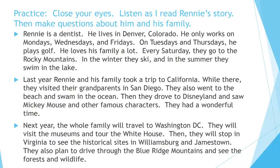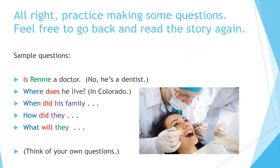Now it's your turn to make some questions about the story. Here are some sample questions: 'Is Rennie a doctor?' — No, he's a dentist. 'Where does he live?' — He lives in Colorado. 'When did his family go to California?' 'How did they travel?' 'What will they do in Washington D.C.?' Think of your own questions — this is for you to practice. Take as much time as you need. Feel free to pause the video if you'd like more time.